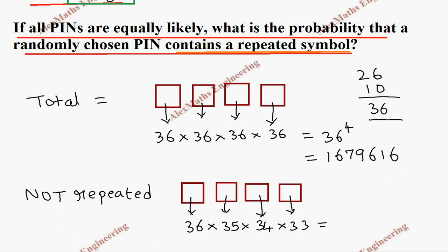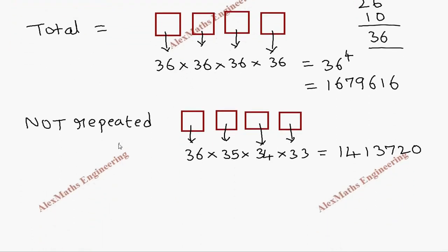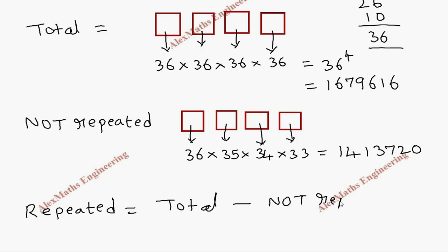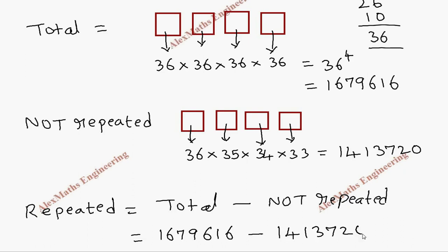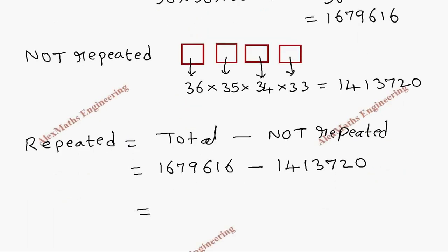The product of 36 × 35 × 34 × 33 is 1,413,720. We already have the total and the non-repeated count. To find how many PINs have repeated symbols, we subtract: 1,679,616 minus 1,413,720 equals 265,896.